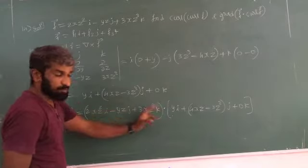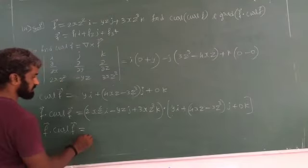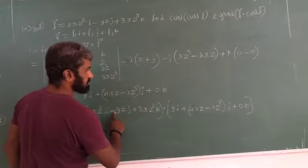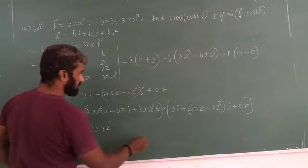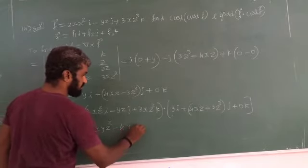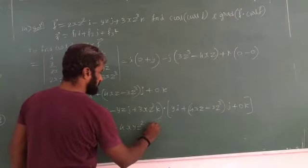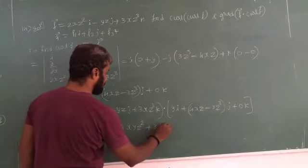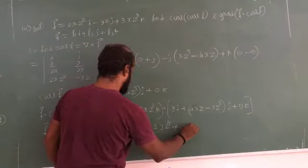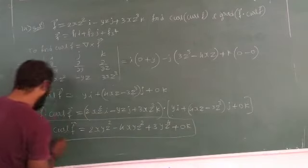i dot i is 1, so it is 2xyz². j dot j is 1, so minus times 4xz minus 3z³, which is minus 4xyz² plus 3yz⁴. Plus 0 for the k component. So F dot curl F equals 2xyz² minus 4xyz² plus 3yz⁴.